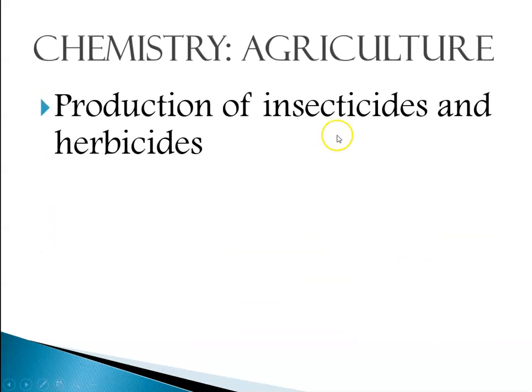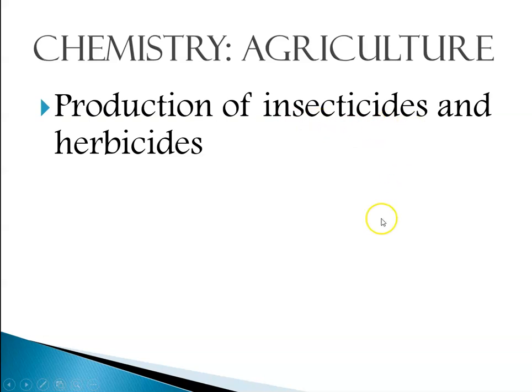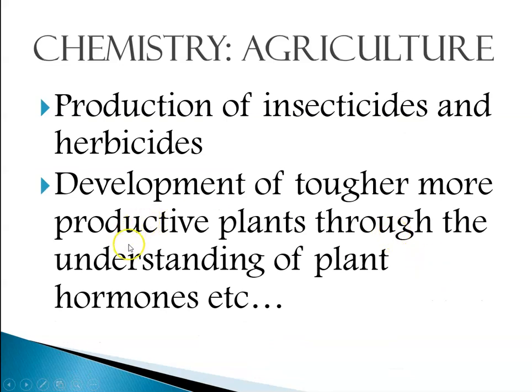Agricultural chemistry includes the production of insecticides and herbicides. People are looking for things that will make plants resistant to, for instance, the spotted lanternfly, or insecticides that can be used to get rid of those insects without harming the plants or the humans. The development of tougher and more productive plants that are disease resistant or that travel better from the farm to the grocery store all involve chemistry and biochemistry.